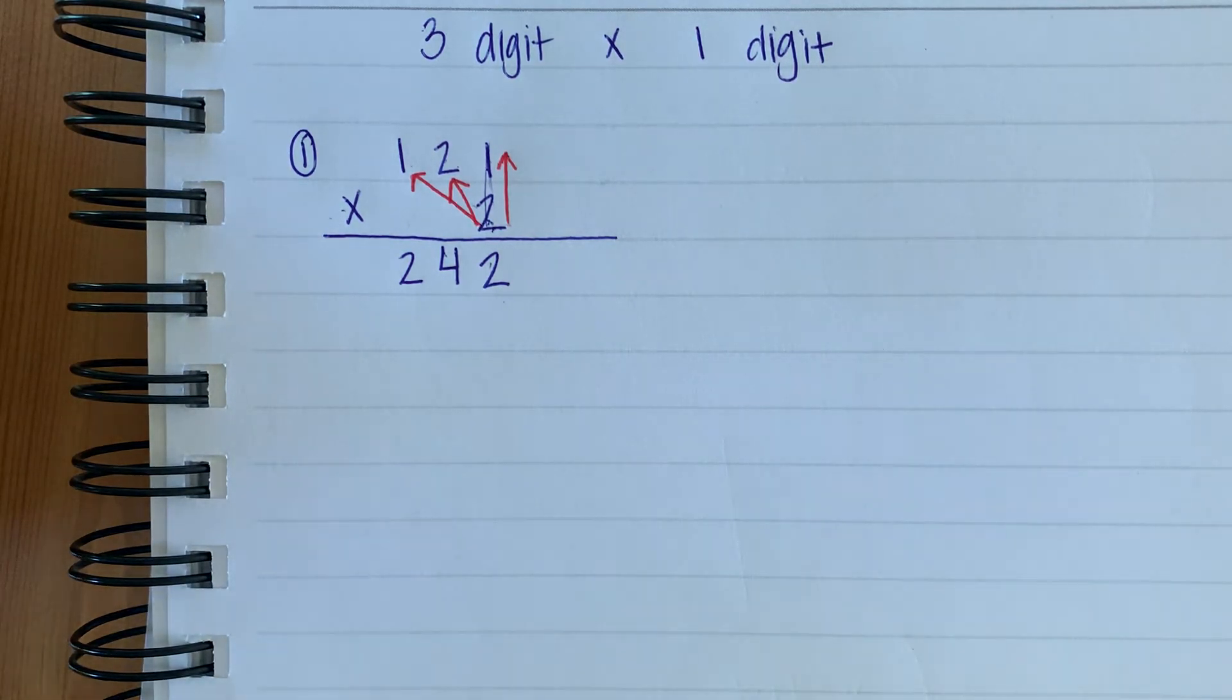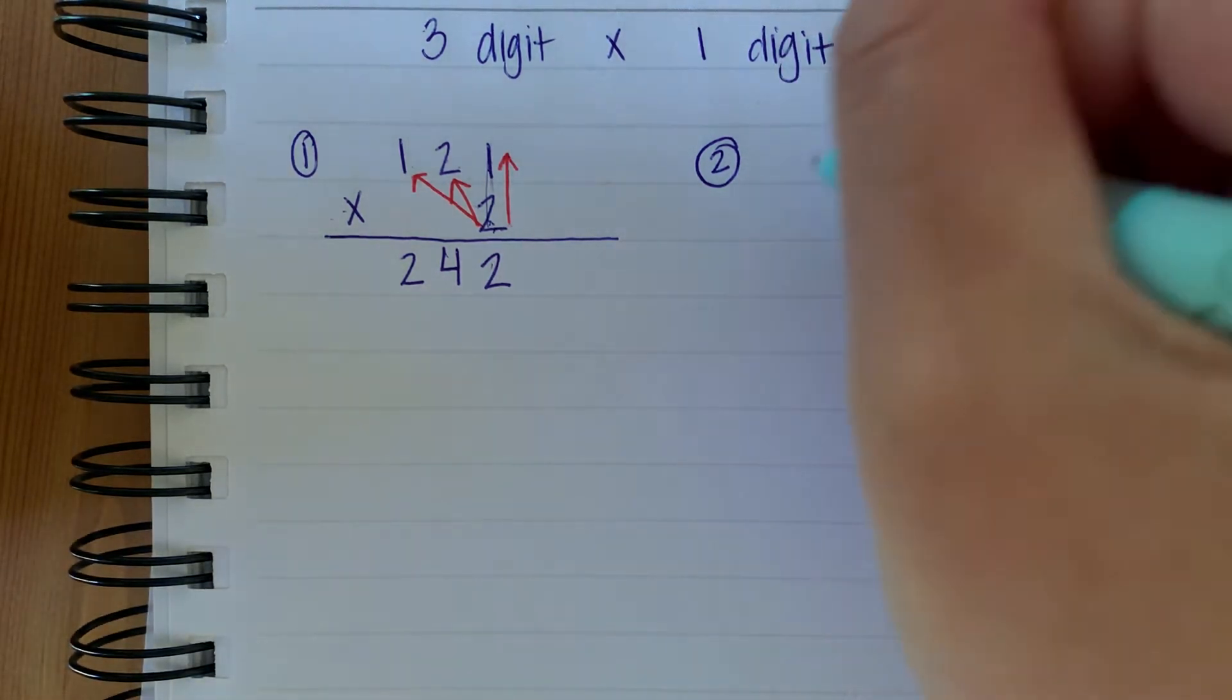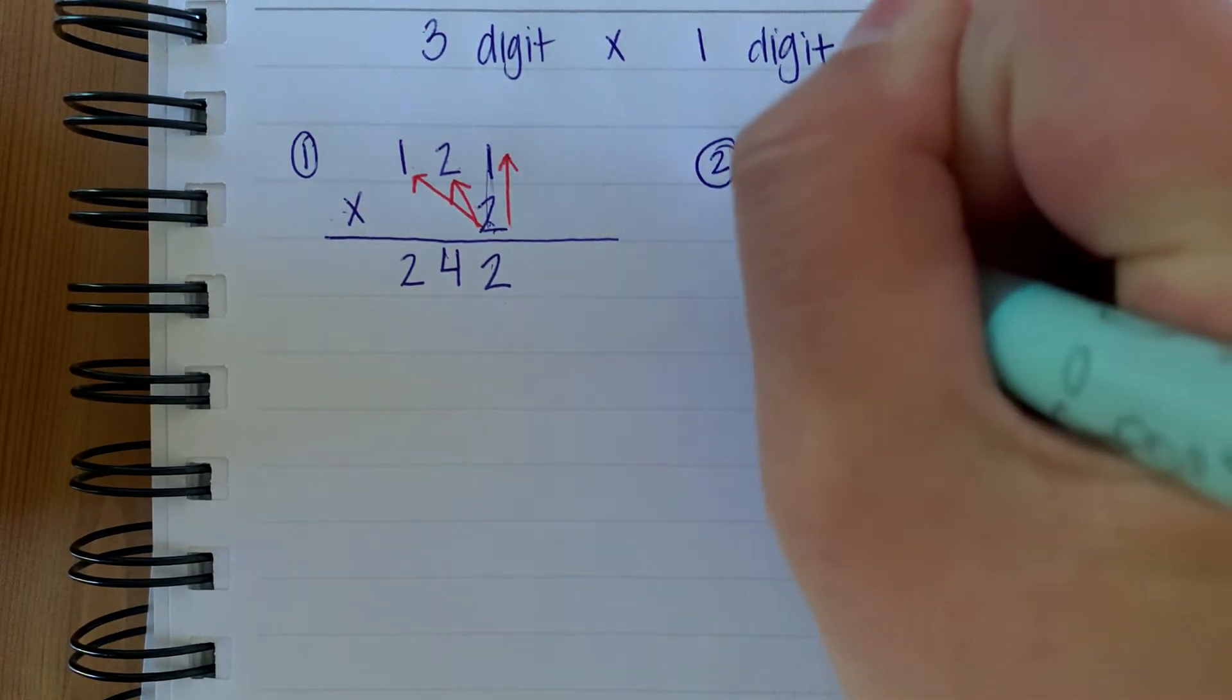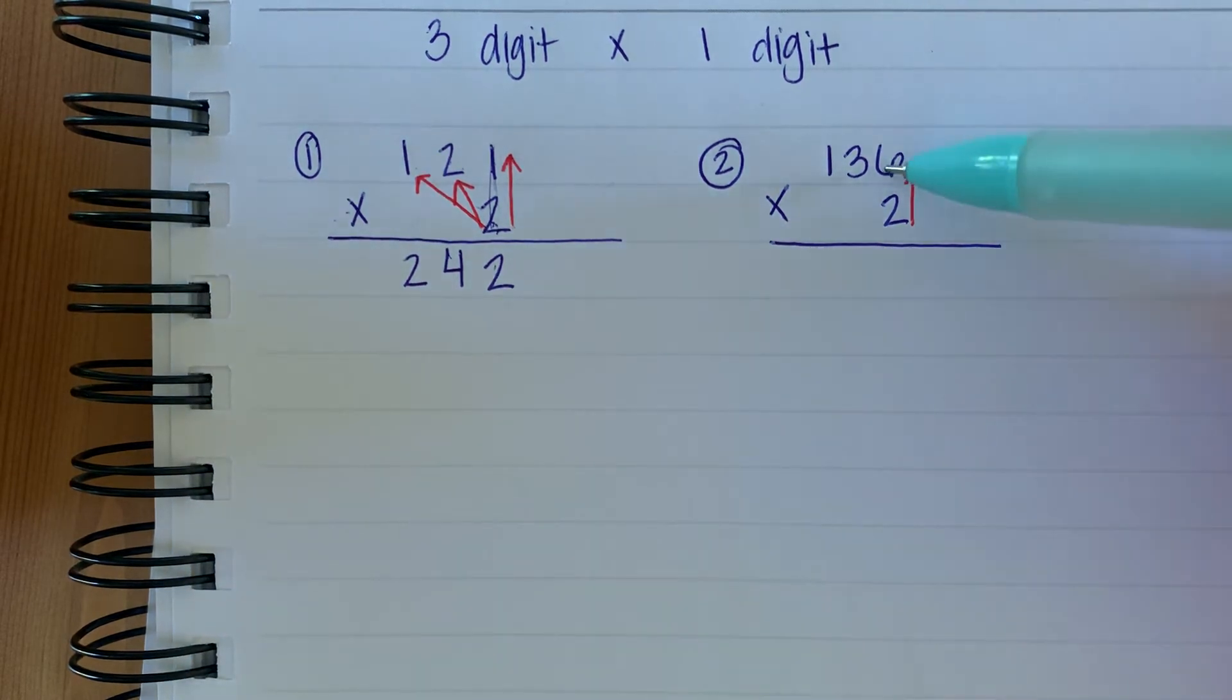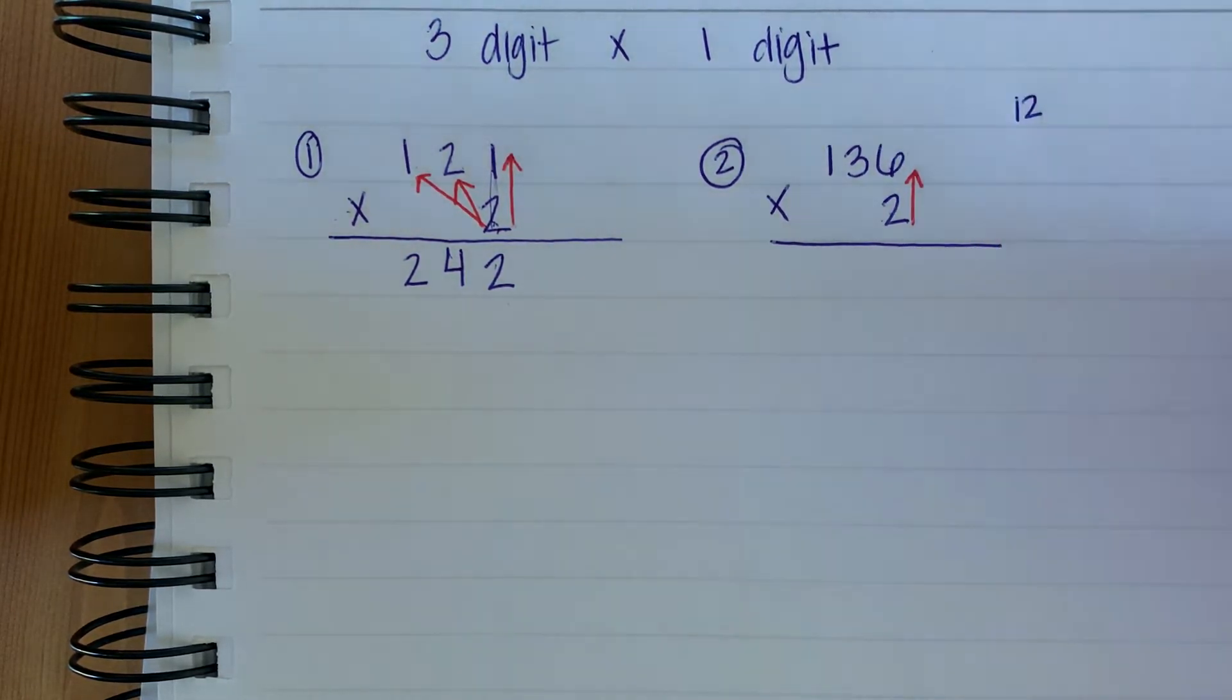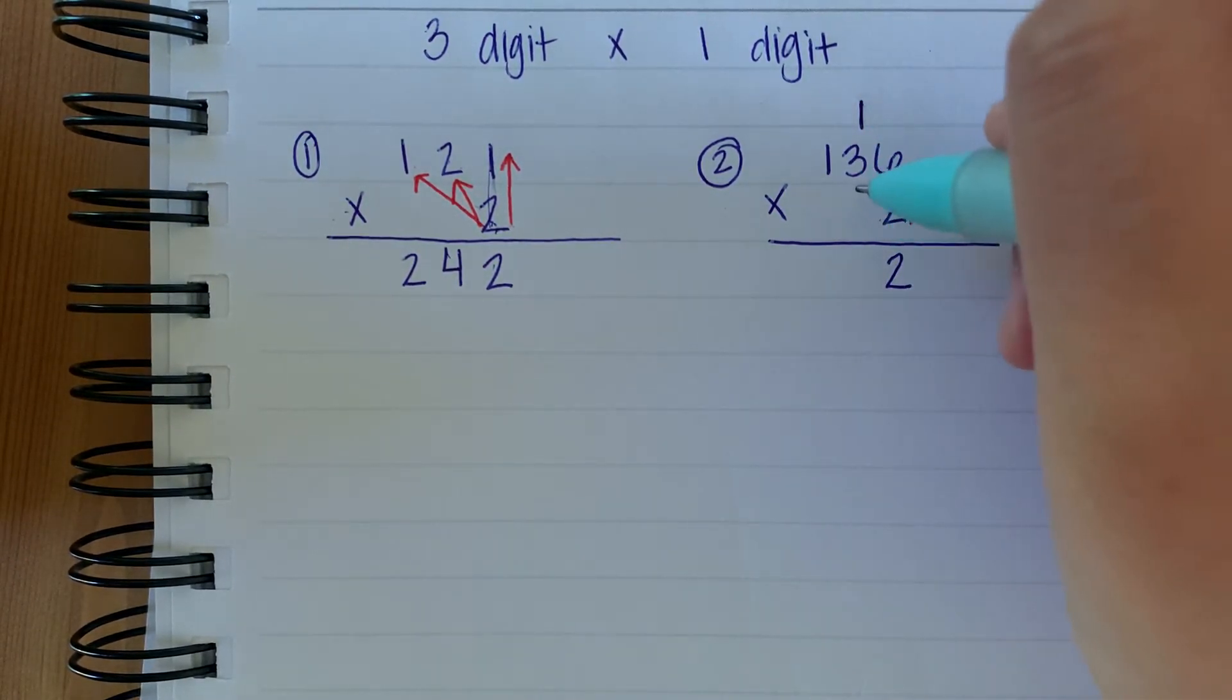All right, let's try another one. Number two. Let's do 136 times two. We are going to go this way first. What is six times two or two times six? It's 12. But we can't write this whole number in the ones place. So what we're going to do is we're going to put the two here and bring the one up here. And we're going to add this after we multiply.